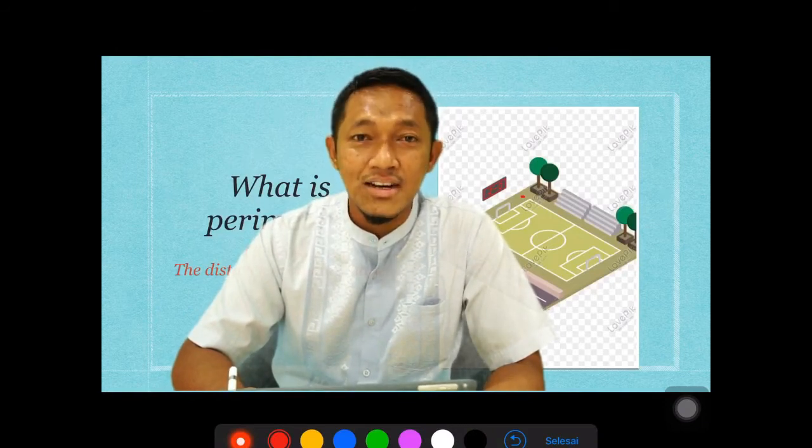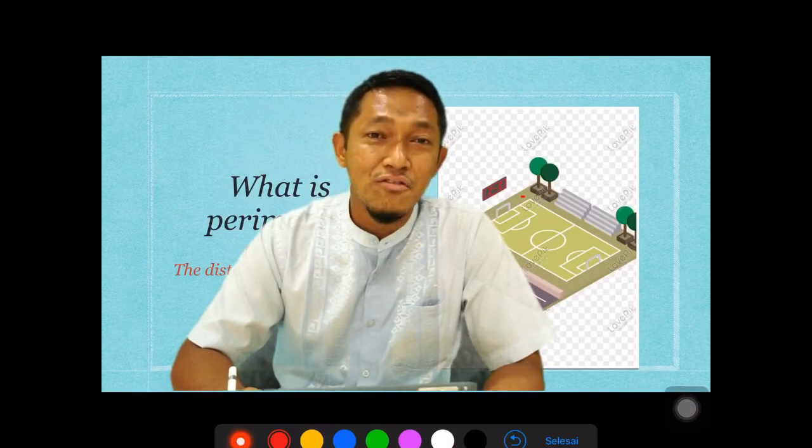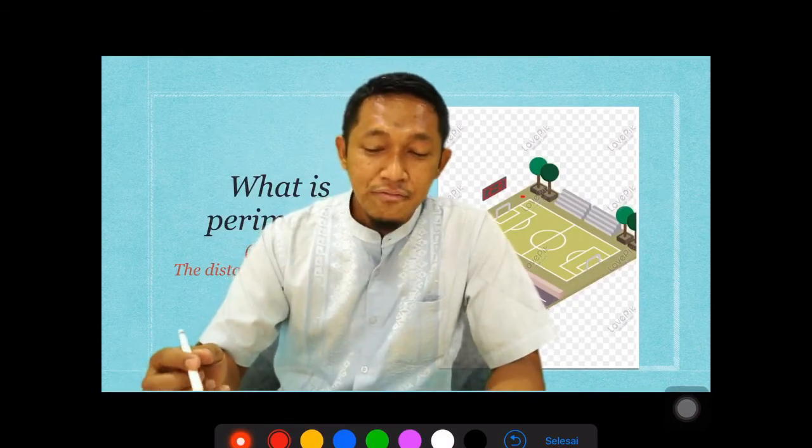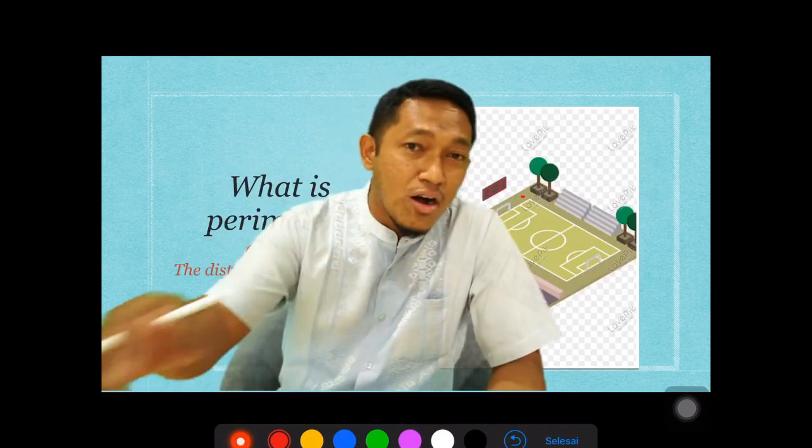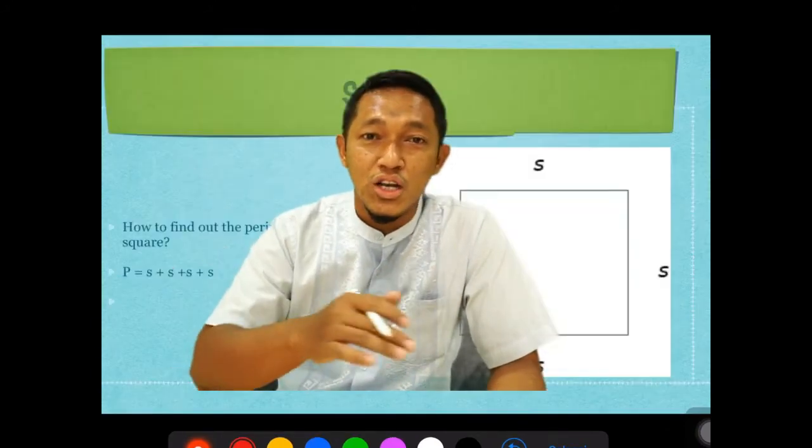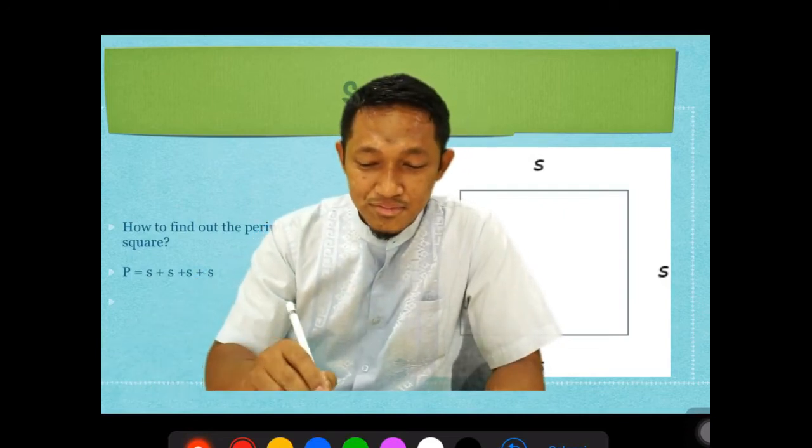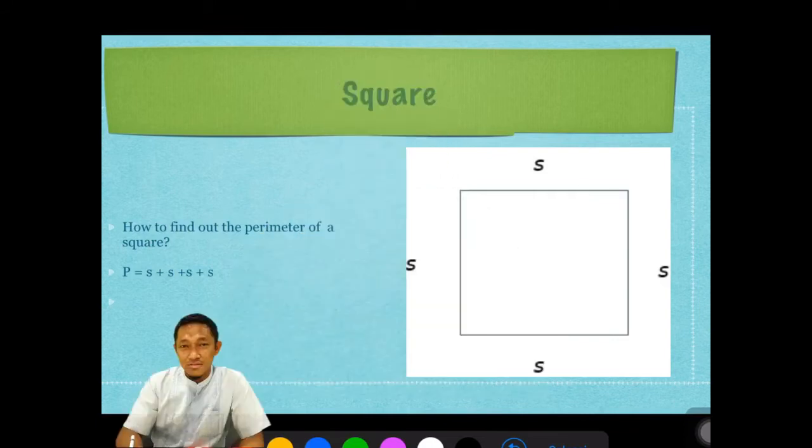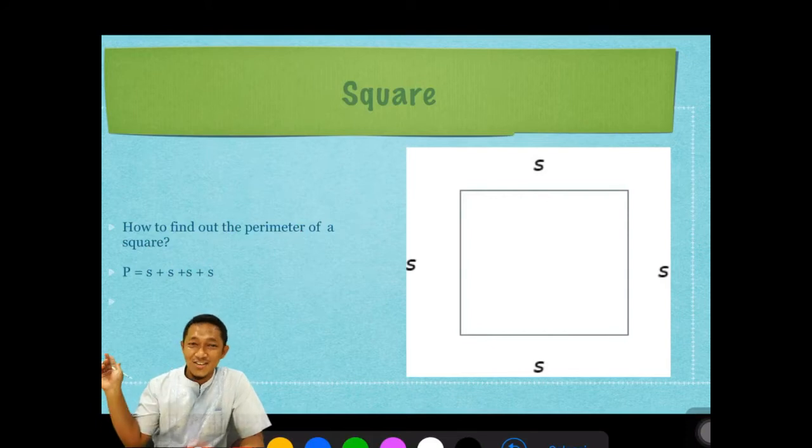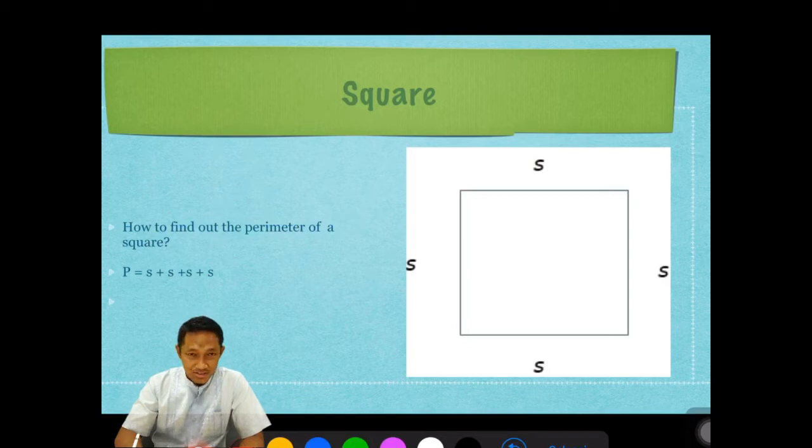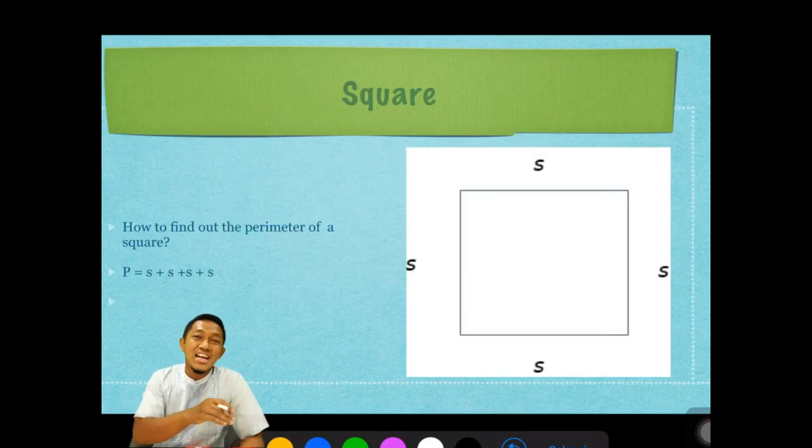Keliling. Ke-li-ling. Okay, I will give you one example. Have you run around the yard? Mungkin mengelilingi lapangan sepak bola. Have you ever? Yeah. Okay, when you walk around the yard or the stadium or lapangan basket, mungkin yang ada di sekolah, it means that you only did count or measure the perimeter.